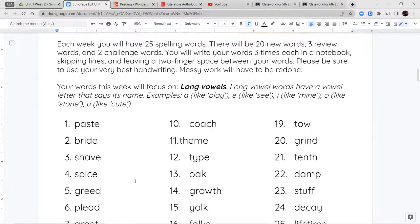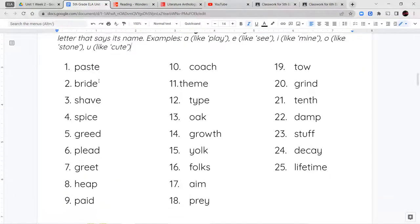So let's take a look at your words. You have the word haste, bride, shave, spice, greed, plead, greet, heap, paid, coach, theme, type, oak, growth, yoke, folks, aim, pray, toe, grind, tenth, damp, stuff, decay, and lifetime.